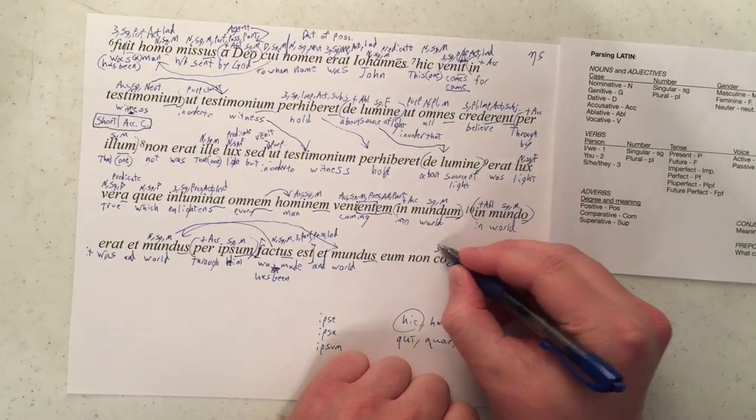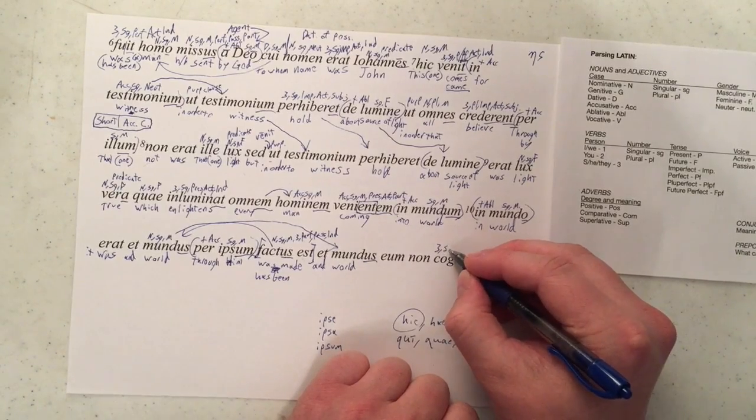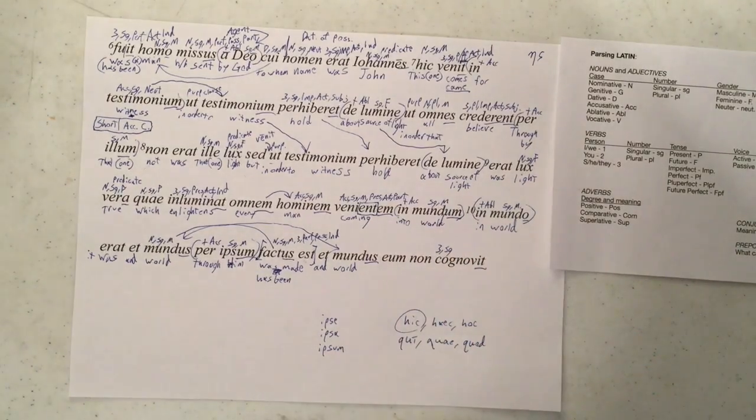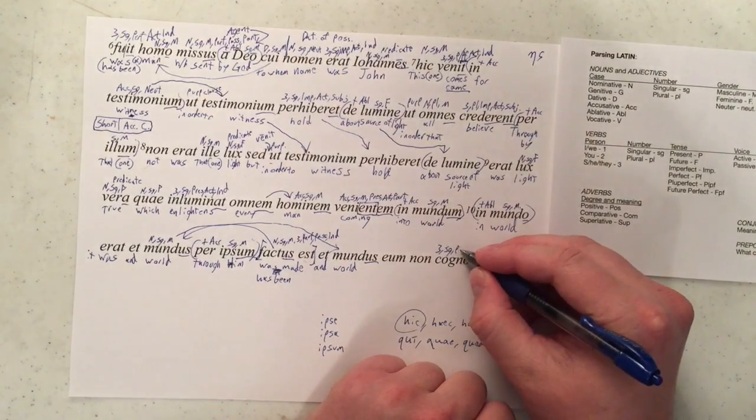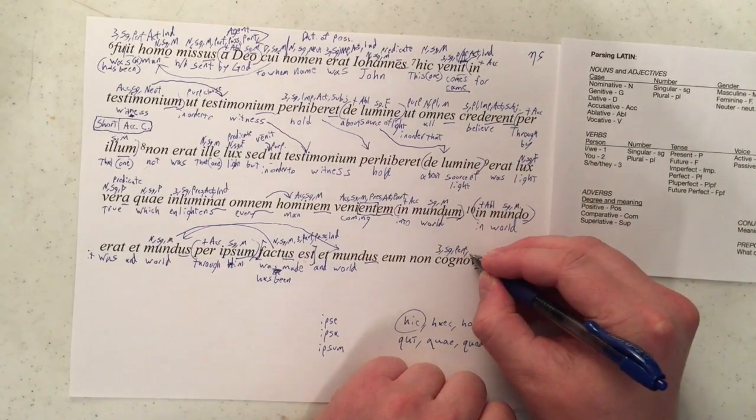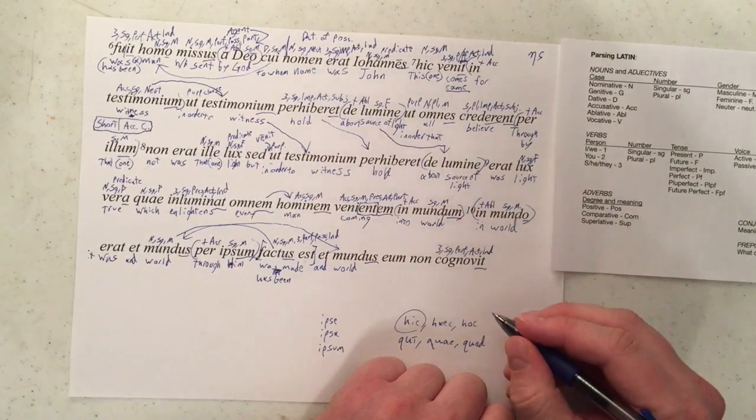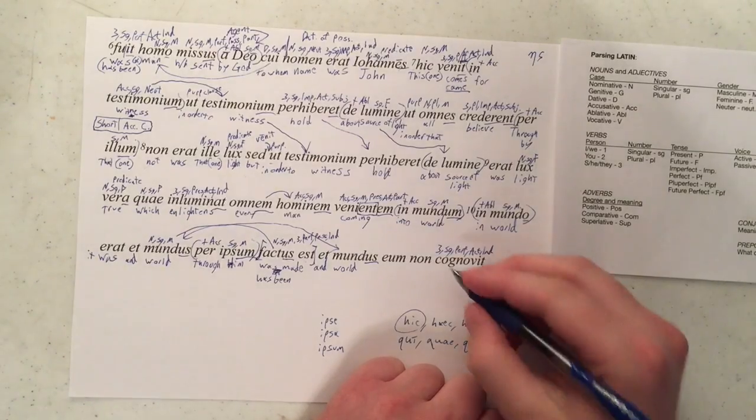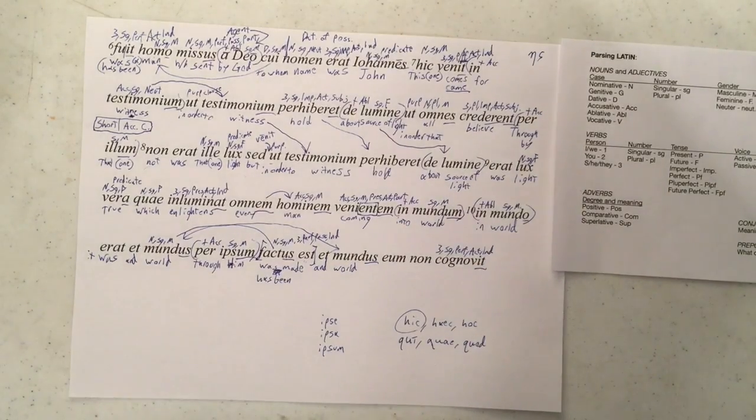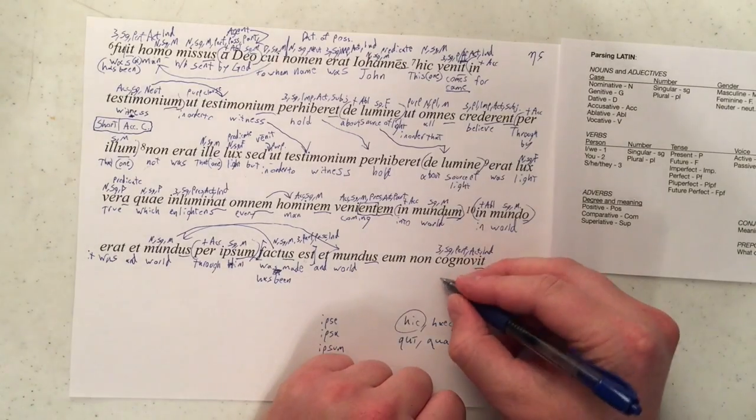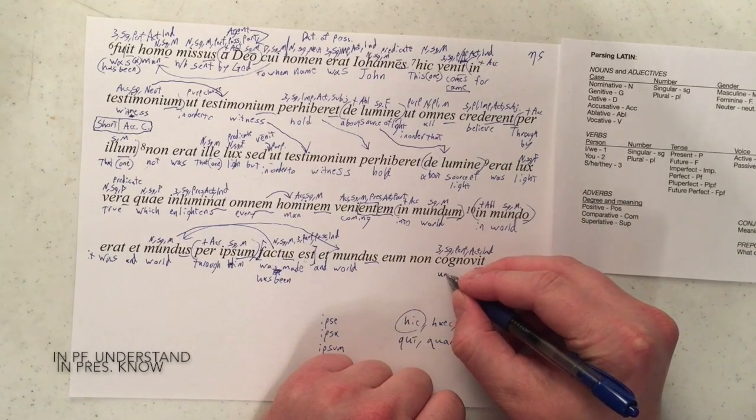Got a third person singular ending because of that T. Cogno, cognoscere, cognovi. So that would put it in the perfect tense. And it's active. And it is indicative. And this would be cognitive, understand, probably understand. Perfect.